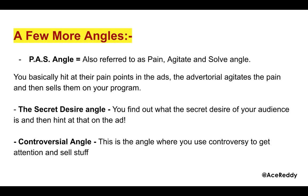The secret desire angle is where you find out what the secret desire of your audience is and hint at it in the ad. For example, if you were selling weight loss supplements, the secret desire for a guy trying to lose weight might be to attract more women — to be more attractive to members of the opposite sex. So you hint at that: 'just become this very attractive figure, be the most talked about person, imagine all the girls talking about you.' You're hitting a secret desire and making him feel understood.